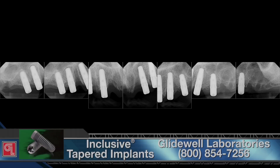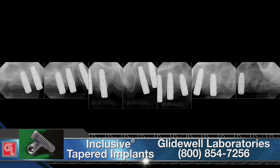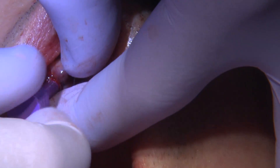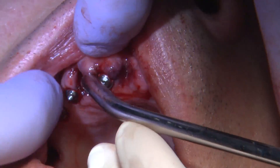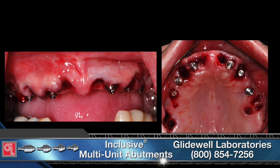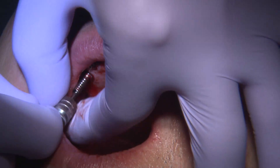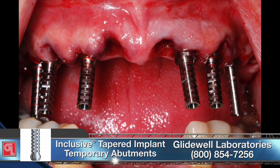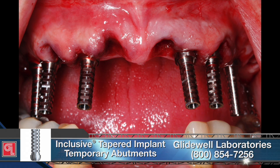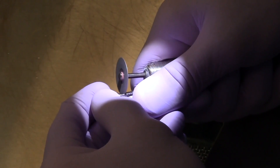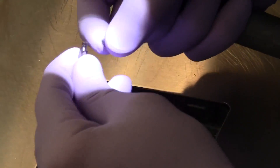Once that's completed, I retrofit the CAD-CAM-milled temporary on top of the implants. Here you can see the radiographs of all the implants in place. The next step is to change the implant platform — which is at bone level — to the tissue-level restorative platform by attaching multi-unit abutments. Then I place temporary cylinders on top of the multi-unit abutments. These look extremely long, so I need to fit the temporary over them and shorten them in the lab to the proper height so they don't protrude through the temporary.